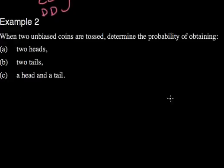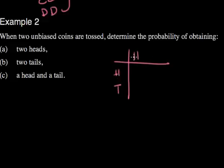In this second example, when two unbiased coins are tossed, determine the probability of obtaining two heads. Well, this is where we have to remember drawing our grid. So we could have the first coin as heads or tails, the second coin as heads and tails.